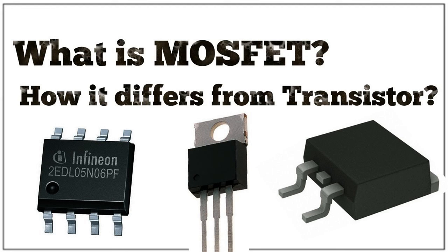The switching function of MOSFETs is one of their primary and most fundamental roles in electronics. When a voltage is applied to the gate terminal of a MOSFET, an electric field is created, attracting charge carriers — electrons or holes — to form a conductive channel between the source and drain terminals.